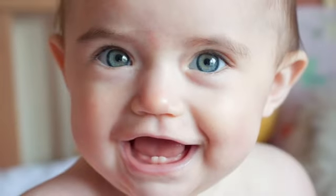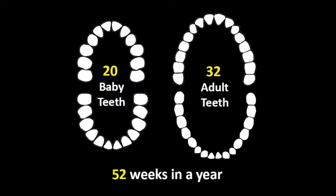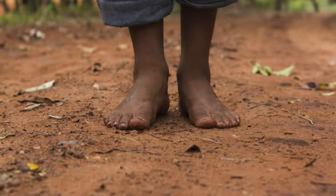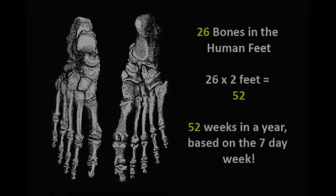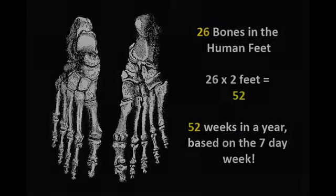But it doesn't end there. The human baby is born with 20 baby teeth, and the adult set of teeth numbers 32, which means that your 20 baby teeth and your 32 adult teeth sum to 52 — the number of weeks in the year. Each human foot has 26 bones, which means that when you have both feet planted firmly to the ground, there are 52 bones that allow you to walk on this earth — once again equivalent to the number of weeks in the year, with 7 times 52 equaling 364.